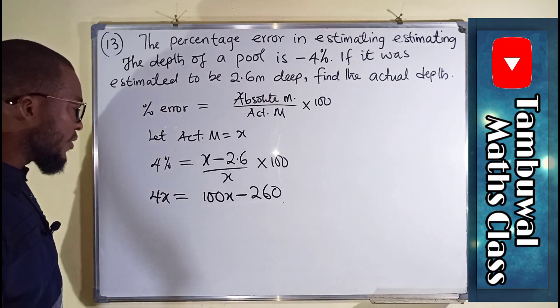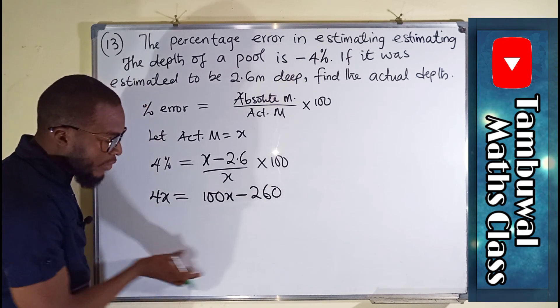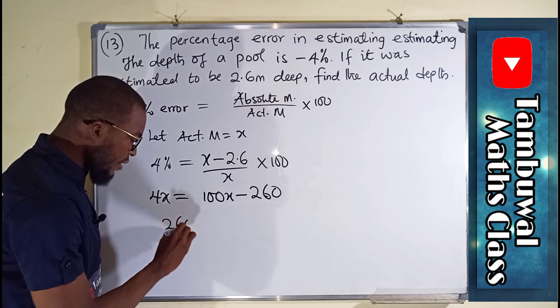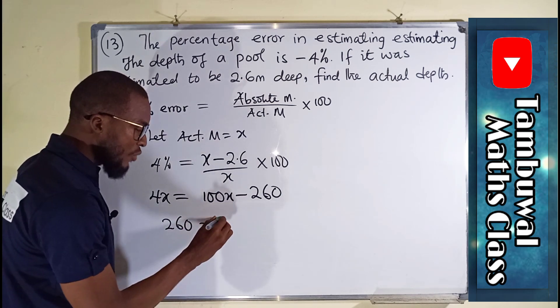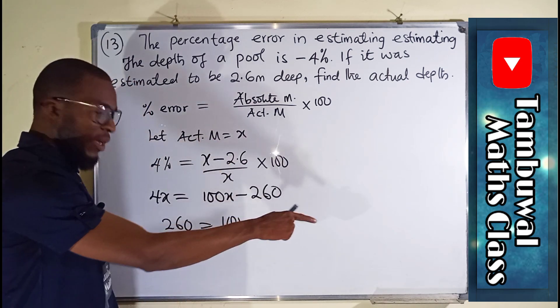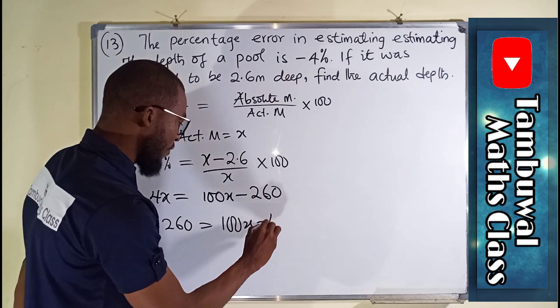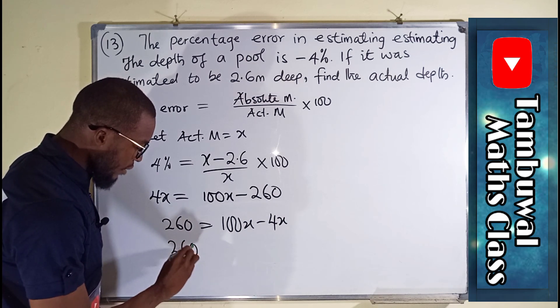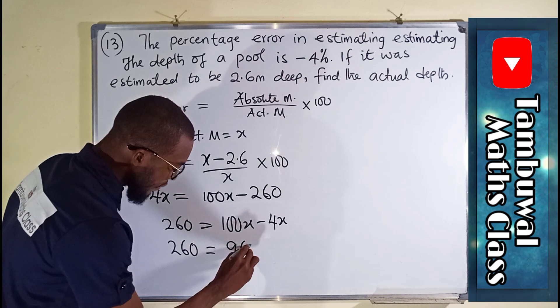So we can now collect the like terms. This term here is negative. Once it comes back, it becomes positive. So we can say 260 to the left. This is equal to, already we have 100x there. If this one crosses over, here it is positive. It is going to become negative 4x.